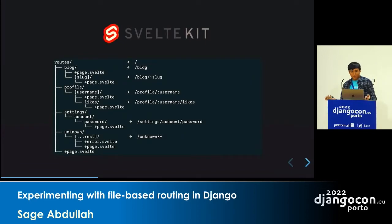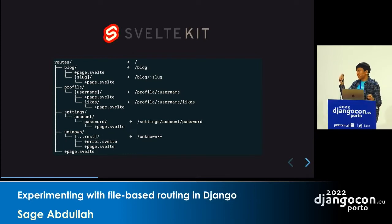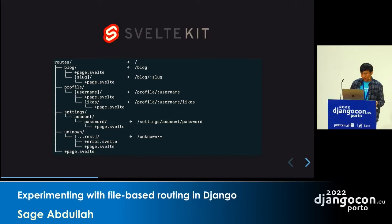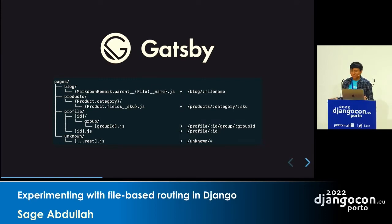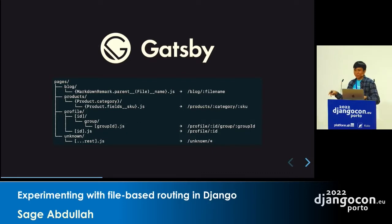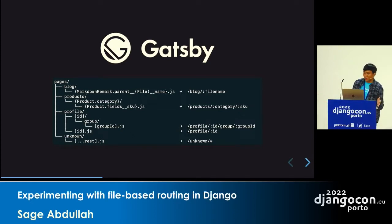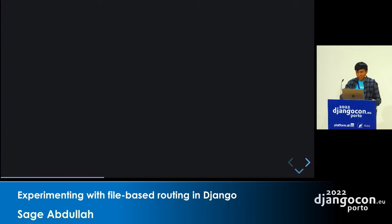In SvelteKit it's a bit different — instead of relying on file names, you need to explicitly create directories, and the pages will be defined by a file called +page.svelte. So routes need to be explicitly defined by directories. And then there's Gatsby, a React web framework that also integrates with a GraphQL API. It can hook up into the GraphQL API with just pointed fields, making things quite complex.